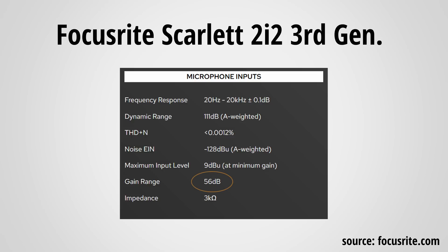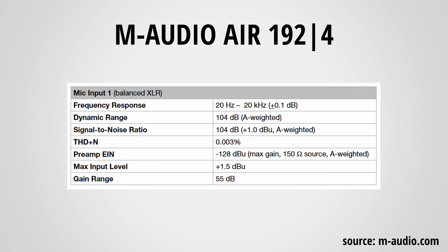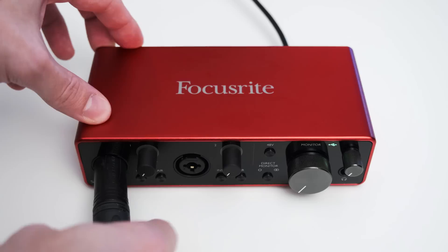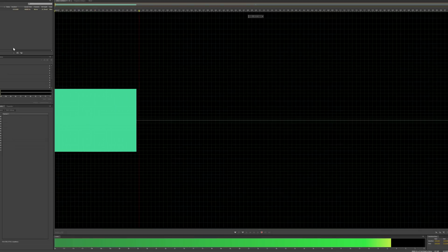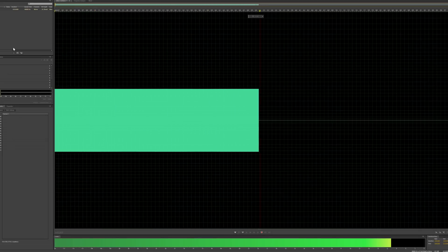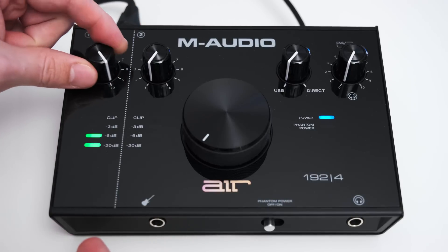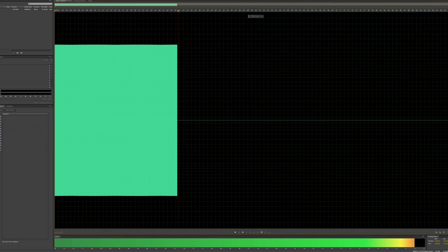Before we start, let's see if what I'm saying is actually true. The Focusrite 2i2 3rd gen has a gain range of 56dB and the M-Audio AR192-4 a gain range of 55dB. That's only a 1dB difference and you might expect both interfaces to capture a similar signal level. Here I have a signal generator which outputs a constant sine wave. When I plug this into the 2i2 and turn the gain all the way to maximum, you can see that the interface records a signal level of about minus 11dB. Let's feed the exact same signal into the AR192-4 and you can see that with the gain turned up all the way it records a considerably stronger signal of around minus 3dB. This seems really counterintuitive but trust me it will all make sense at the end.